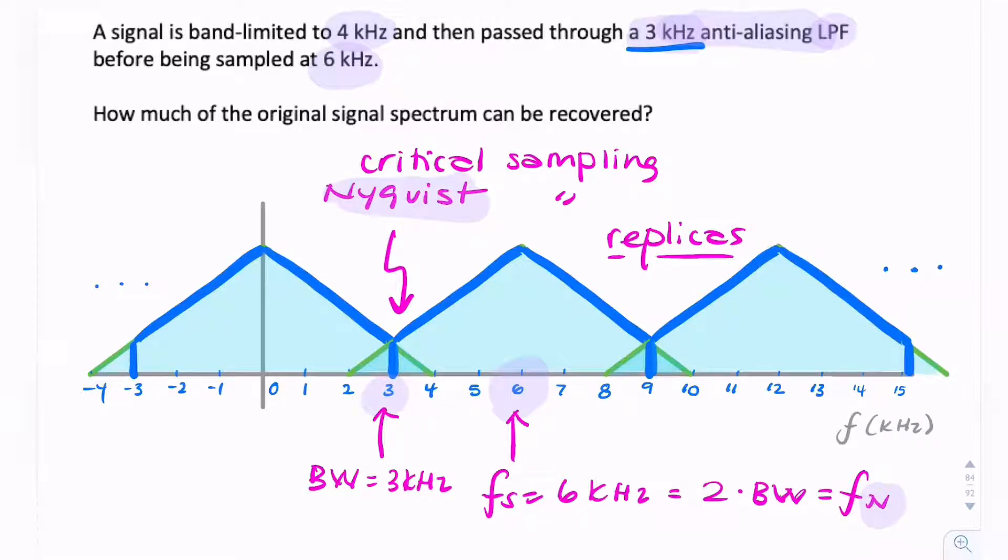An anti-aliasing filter applied before sampling allows more signal to be recovered than an anti-aliasing filter applied after sampling.